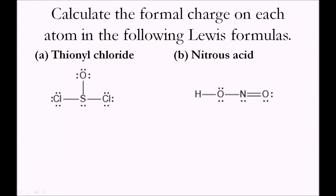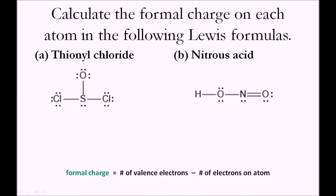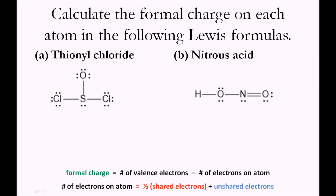Calculate the formal charge on each atom in the following Lewis formulas. We have two molecules: thionyl chloride and nitrous acid. The formula to calculate formal charge is the number of valence electrons normally on an atom minus the number of electrons currently on the atom in the particular molecule. To calculate the number of electrons on the atom, we take half of the shared electrons plus the number of unshared electrons.